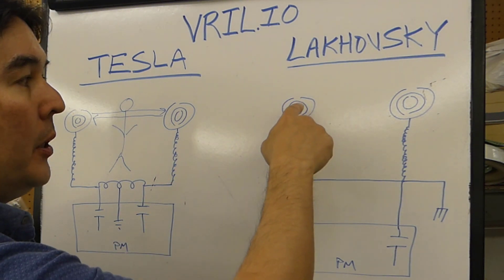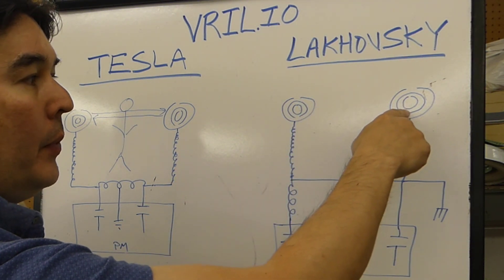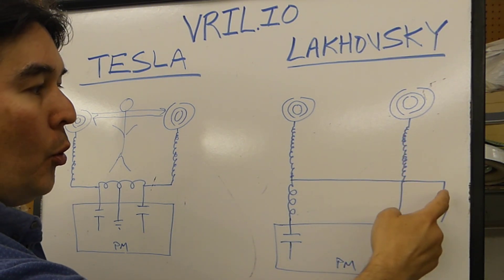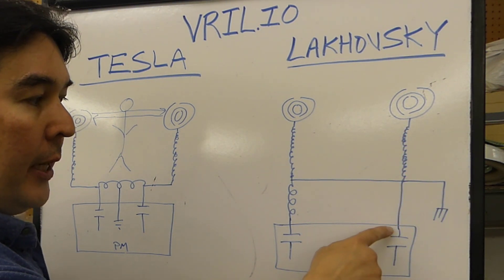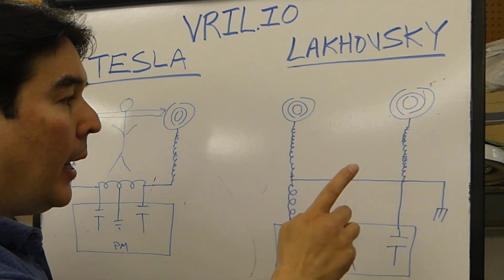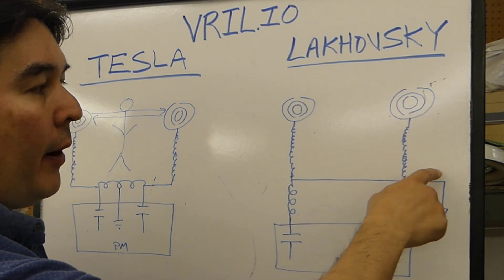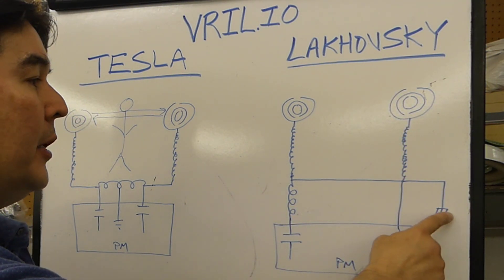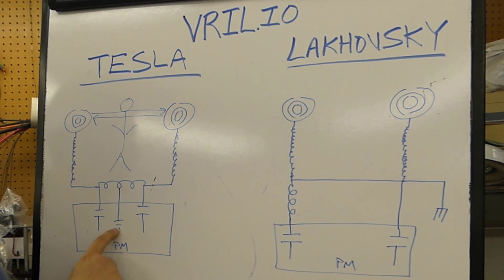The path that it's going to take is over to this antenna, back down through here, to the opposite potential of this cap. But simultaneously, it's also finding a path to ground out here.